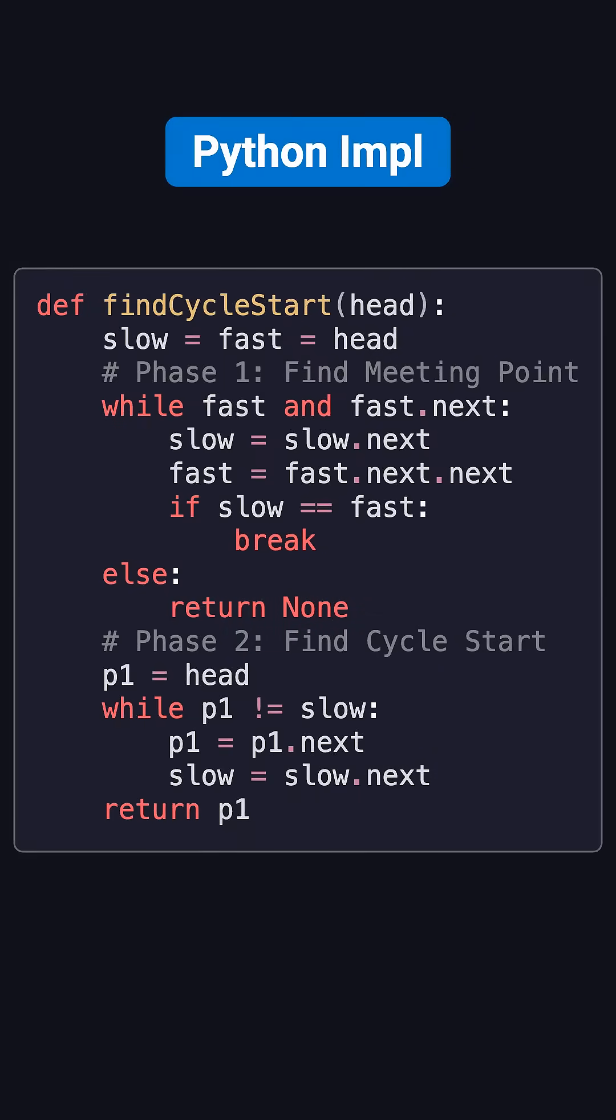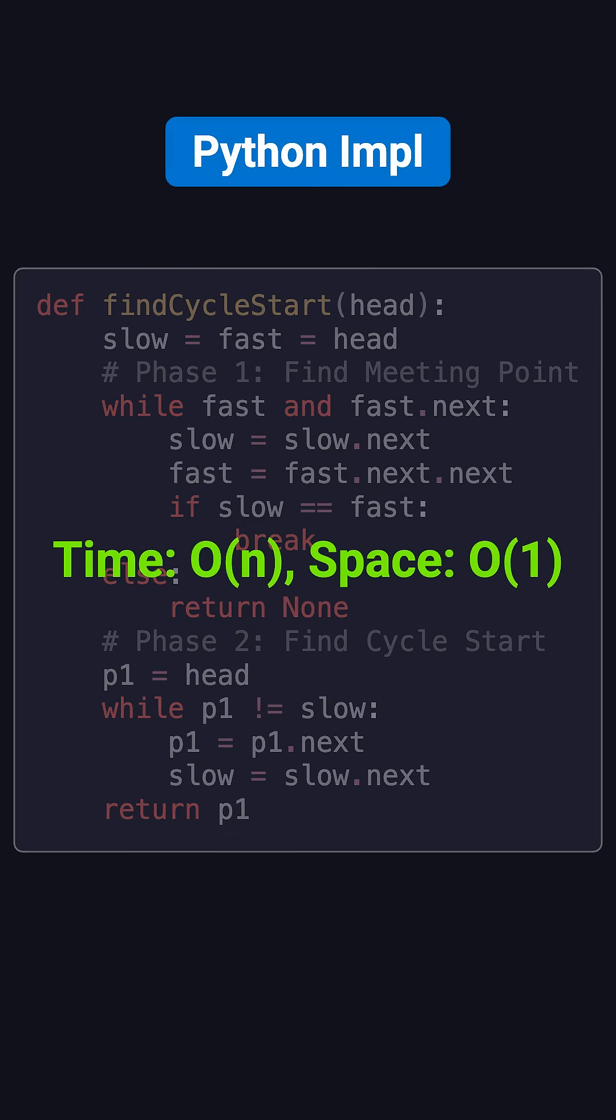Here's the Python code. The first phase finds the meeting point. The second phase finds the start of the cycle. Time complexity is O(n). Space complexity is O(1), making this both efficient and elegant.